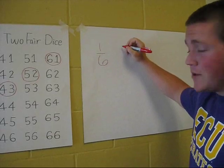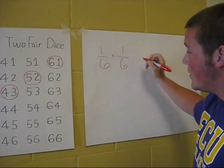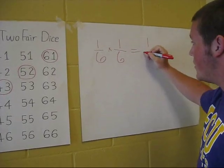But rolling that 2, there's only 1 two on each die, so that's another 1 out of 6. And when you multiply them together, it's a 1 out of 36 chance.